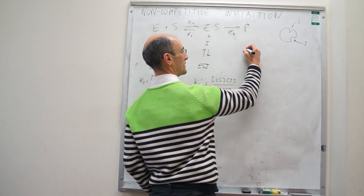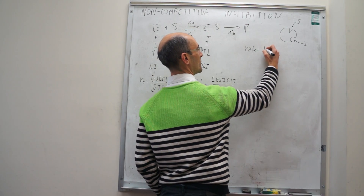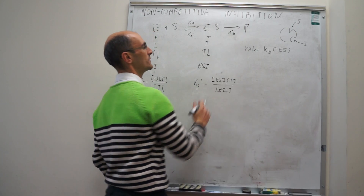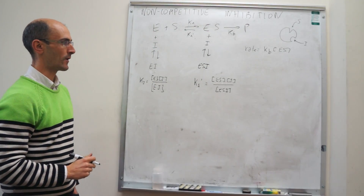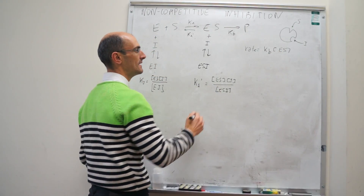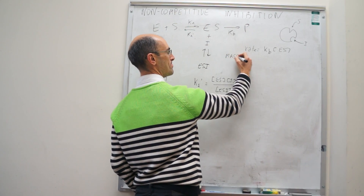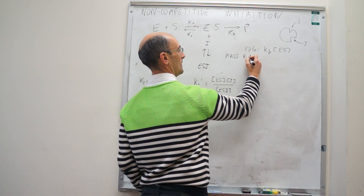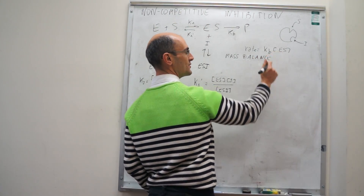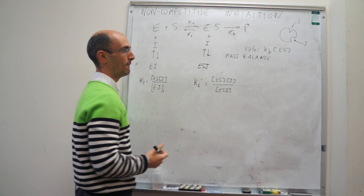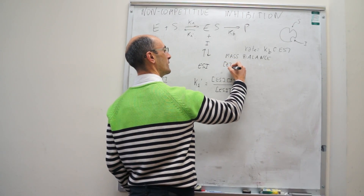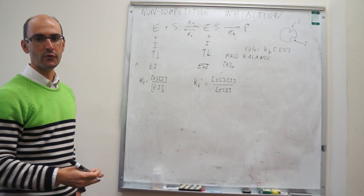Much as before, we set up the rate law by saying that the only reaction that generates products is ES reacting with rate constant K sub B to give products. Much as we have done in competitive inhibition, the way that we're going to find ES is by doing the mass balance of the enzyme. We will set up this expression and then try to solve it as a function of ES.